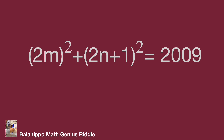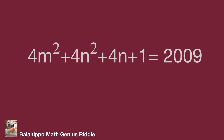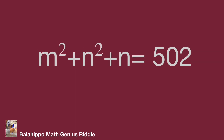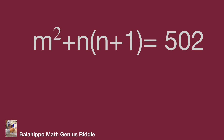Expanding, we have 4m squared plus 4n squared plus 4n plus 1 equals 2009. Simplifying, we get m squared plus n squared plus n equals 502. The equation shows that it is the sum of two items: m squared, and n times quantity n plus 1. The term n times (n plus 1) is the product of two consecutive numbers, which is always even.